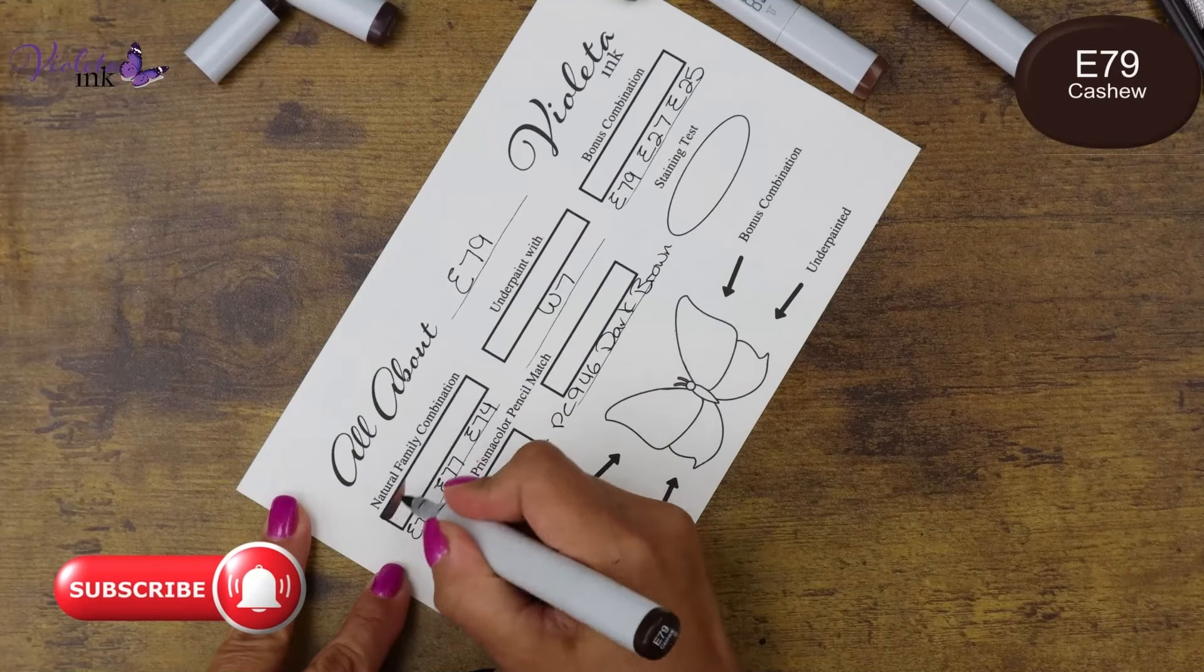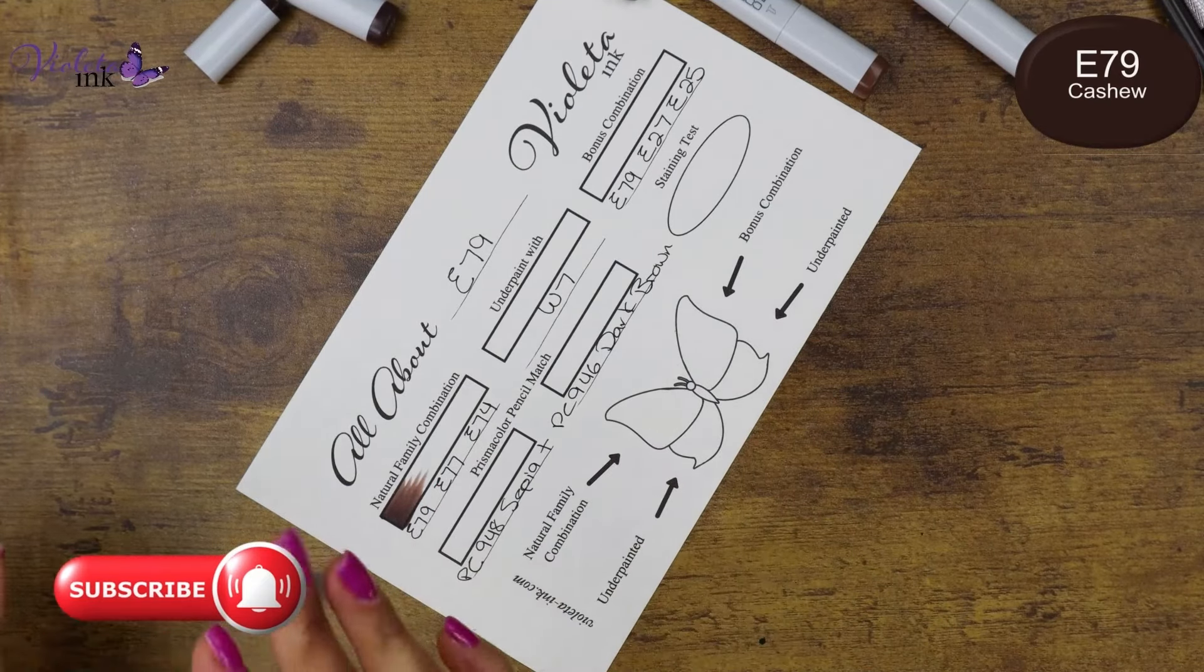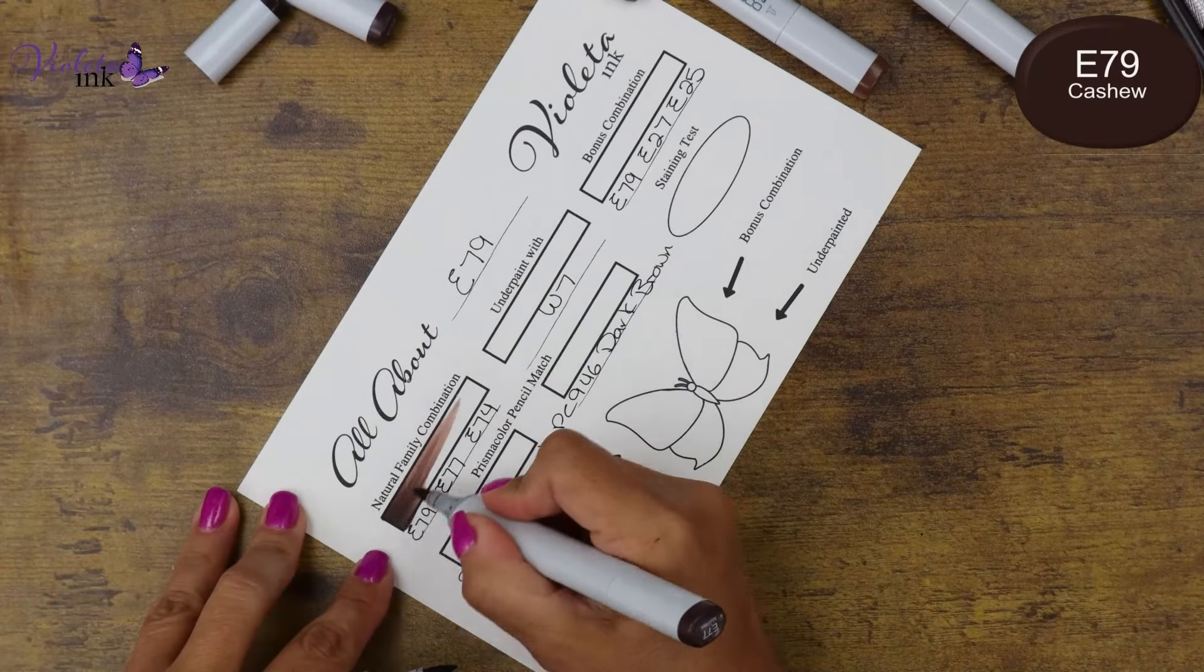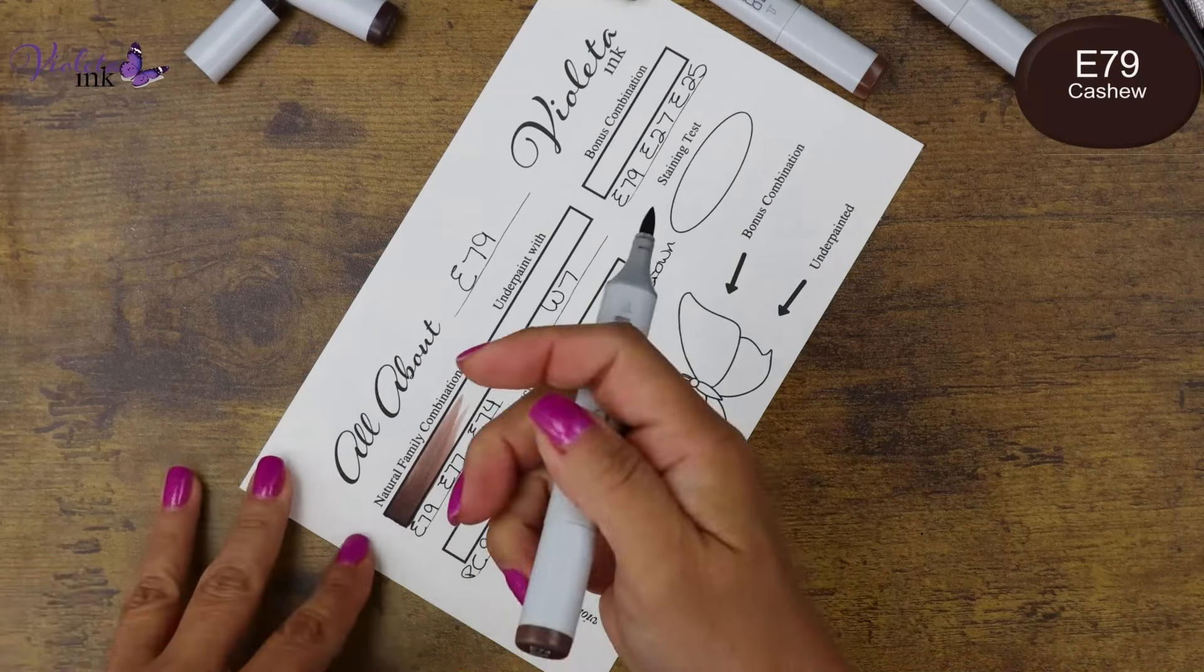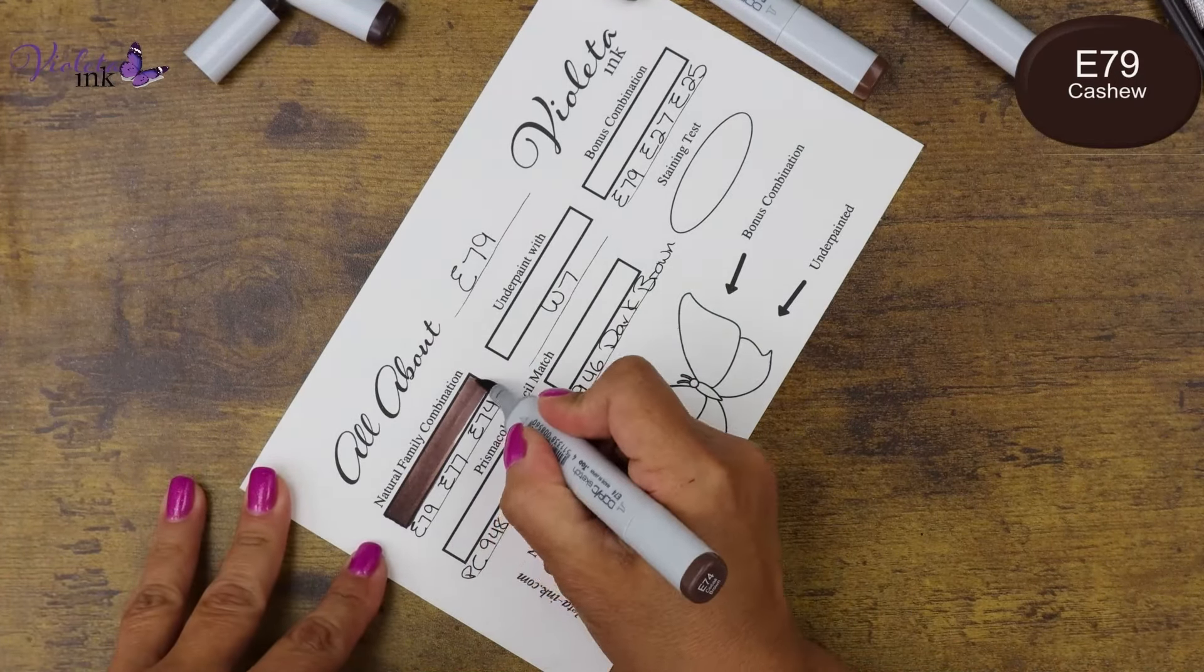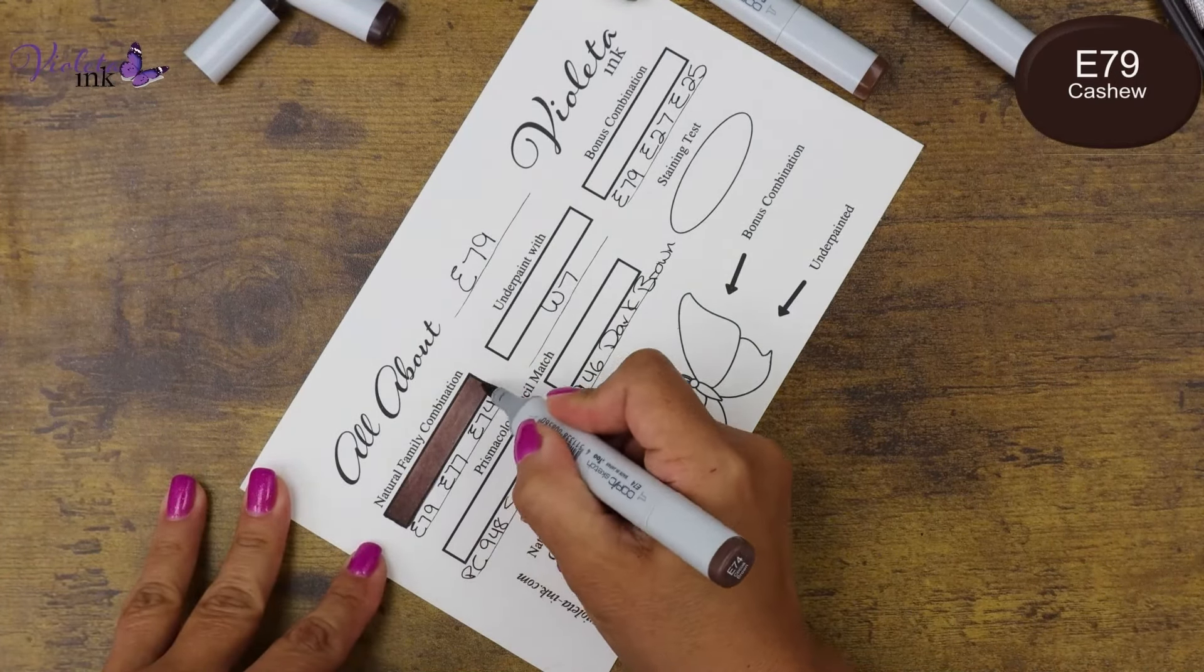We are studying with E79. We're flicking away from the edge. On top of it is E77 and E74.